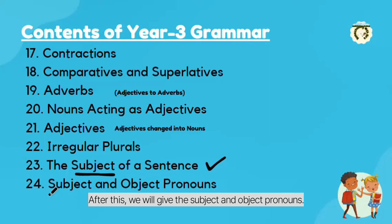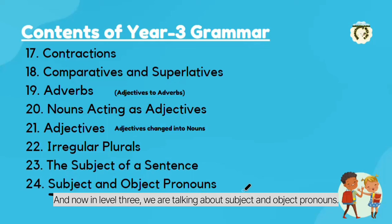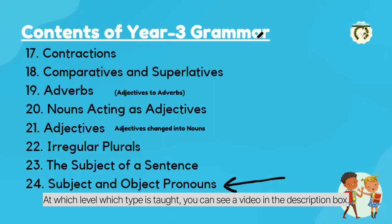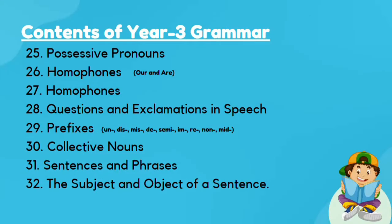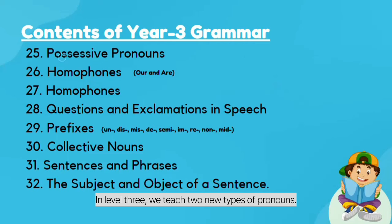After this, we will cover subject and object pronouns. We started pronouns in level 1 grammar, and now in level 3 we are talking about subject and object pronouns. If you want to learn all the types of pronouns taught in Jolly Grammar and at which level each type is taught, you can see a video in the description box. Next we have possessive pronouns. In level 2 we used possessive adjectives, and in level 3 we teach two new types of pronouns: subject and object pronouns, and possessive pronouns.